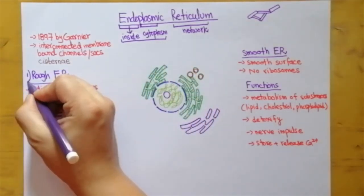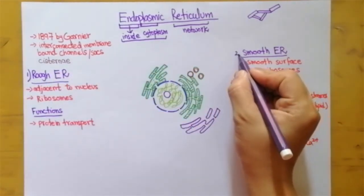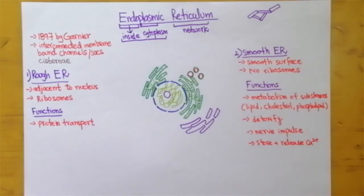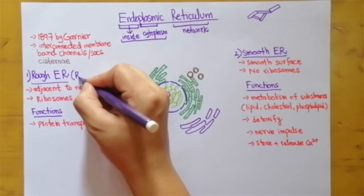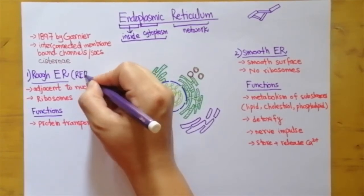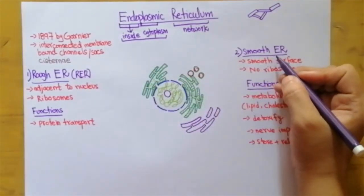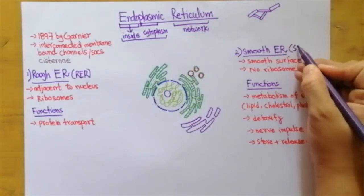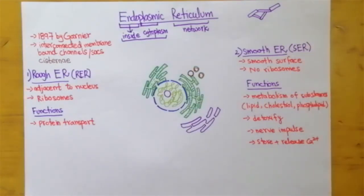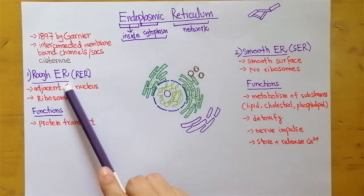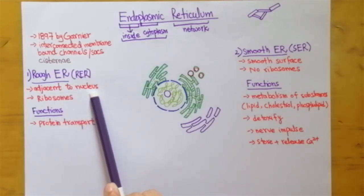The interconnected membrane-bounded channels or sacs are known as cisternae. The endoplasmic reticulum is of two types: the first is rough endoplasmic reticulum, and the other is smooth endoplasmic reticulum. These names are given because of their appearance under the microscope. Rough endoplasmic reticulum is also known as RER, and smooth endoplasmic reticulum is also known as SER.